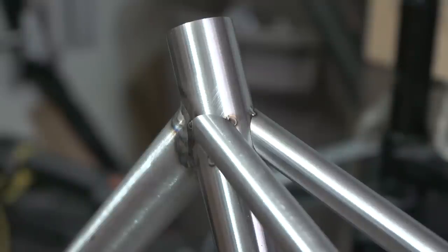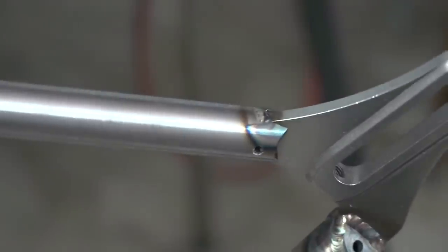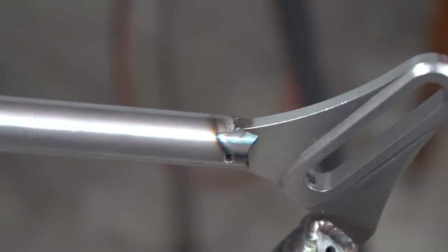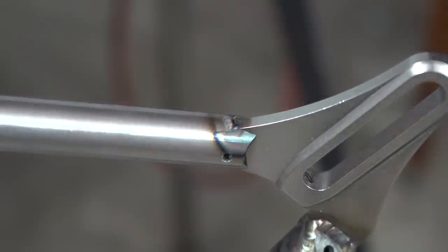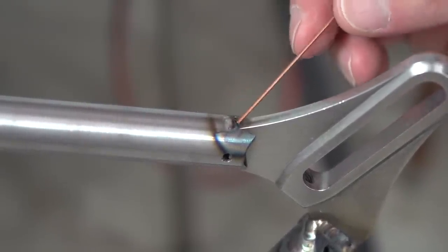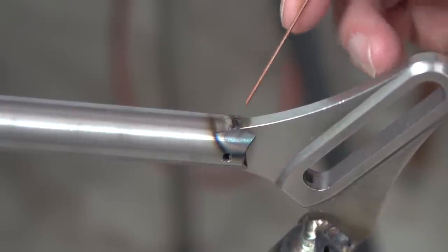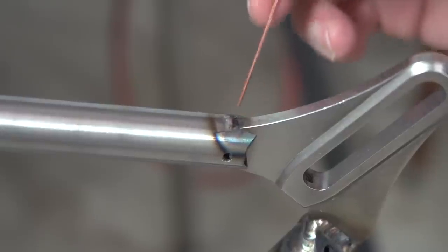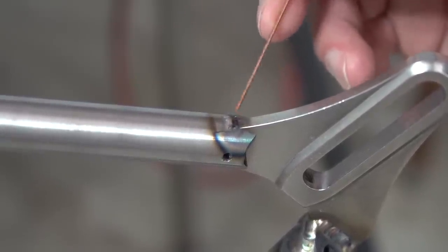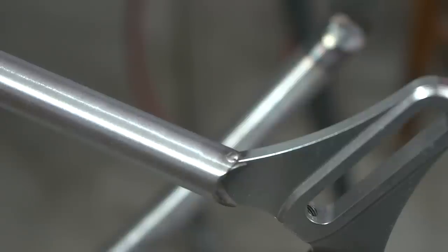I've got the seat stays tacked to the seat tube and I've also, down on the other end, I've got my dropouts tacked. This guy right here was a bit of a problem. There was a really big gap here because when I mitered this I over slotted it and there was some space here so I took that opportunity in the tacking phase to kind of fill that in so I don't have to worry about that later. And here's the other side. This was not as much of a problem because I learned from the other side and I didn't slot it as much on this side.